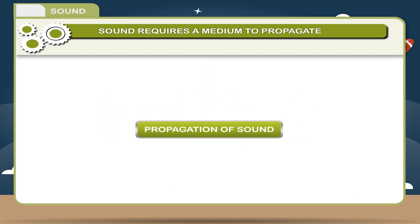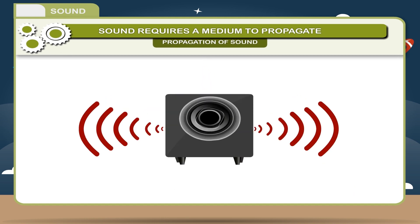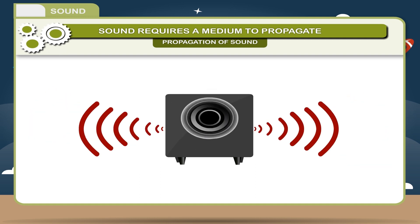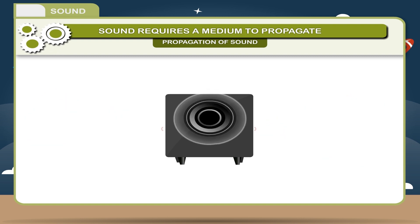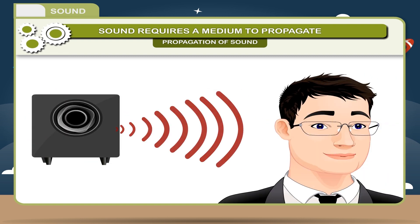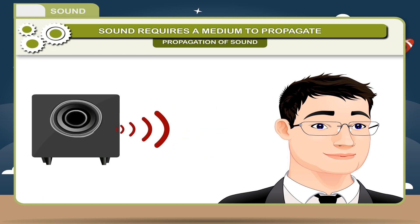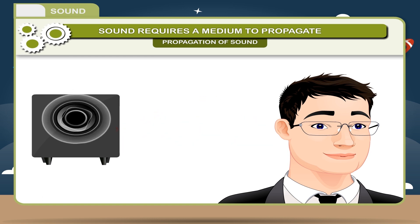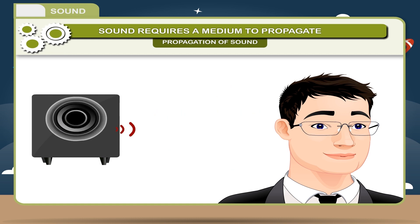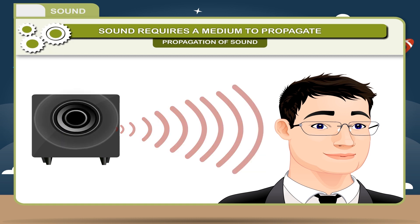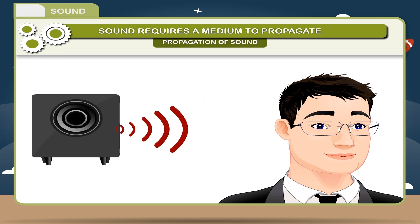Propagation of sound: When a body vibrates, it transfers its energy to the air molecules around it. On receiving this energy, the air molecules begin to vibrate in exactly the same way as the vibrating body. In this way, the air vibrations reach our ear and our eardrum begins to vibrate. The vibrations of the eardrum are analyzed by the brain and we hear the sound.